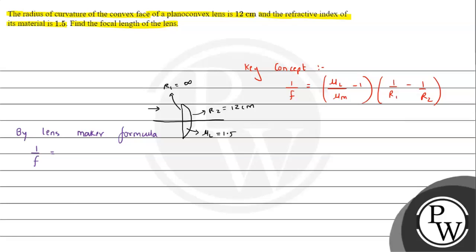We will write 1.5 minus 1 and 1 over infinity. If we talk about sign convention, in the direction of light we take all measurements positive. That is, in this direction all measurements will be done as positive.